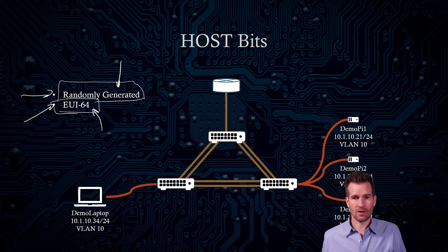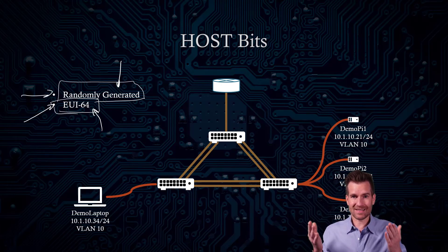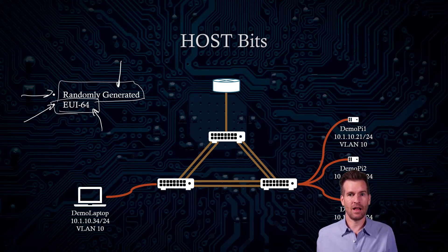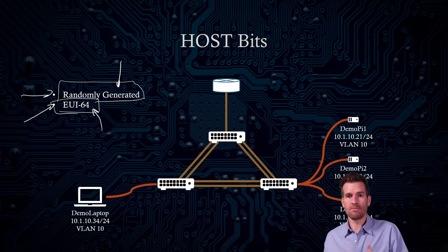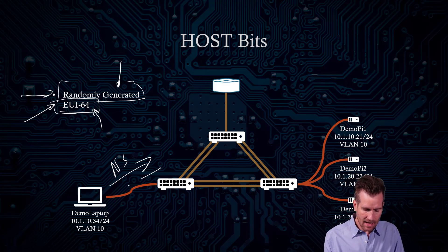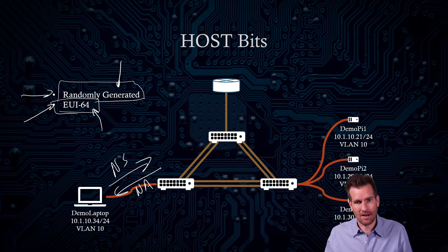For randomly generated host bits, we're talking about 64 bits randomly generated. The chances that another machine on the network randomly generates the same 64 bits are unlikely, but there is a chance it will come up every once in a while. That's where we get into Duplicate Address Detection — the DAD process — to make sure the address is unique on the network. The client performs a neighbor solicitation to verify the address is not taken, and if it is taken, it will receive a neighbor advertisement back.